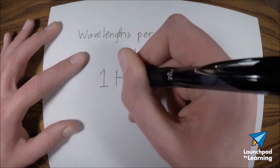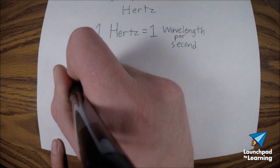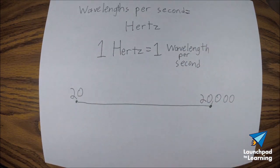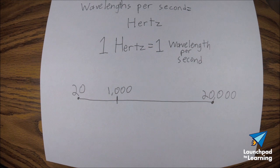We measure wavelengths per second in hertz, which is the standard measurement for frequency. One hertz equals one wavelength per second — this would be so low that we couldn't hear it. Our ears have a range of 20 to 20,000 hertz, and the human voice averages in the neighborhood of 1,000 hertz. If you're wondering why those numbers seem so unbalanced, it's just because the number of wavelengths per second grow exponentially as the pitch grows higher.